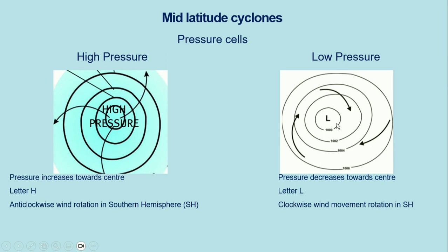In the southern hemisphere, for a high pressure cell, winds rotate in the anti-clockwise direction. For a high pressure cell, the pressure will increase towards the center — you will have the highest pressure in the middle.